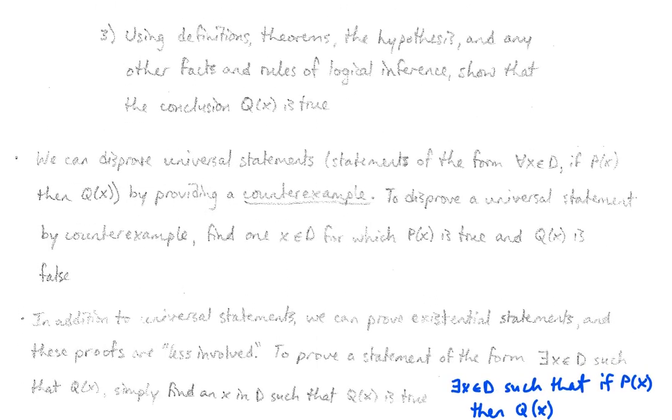We also have existential statements on top of just universal statements. Existential statements are a lot easier to prove. There's a lot less work that would be involved. Existential statements typically take on the form, there exists x in D such that Q(x) is true, or else there exists x in D such that if P(x), then Q(x).